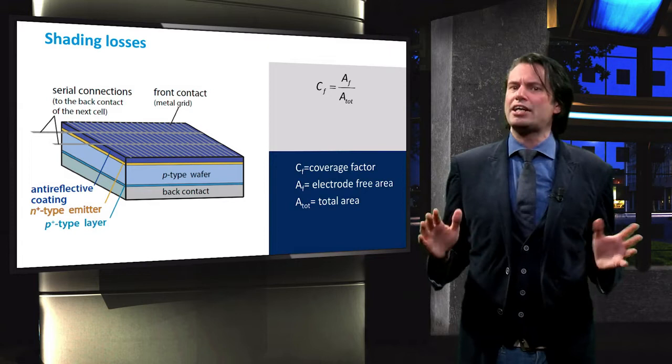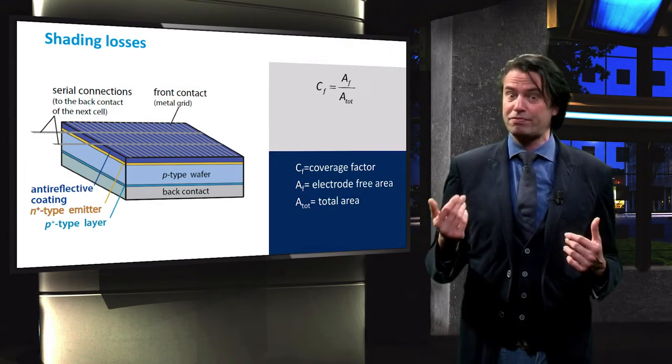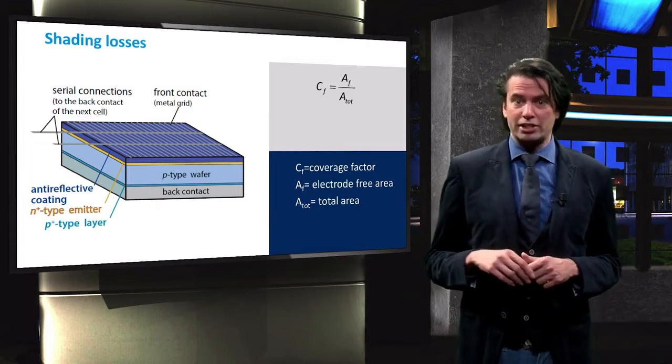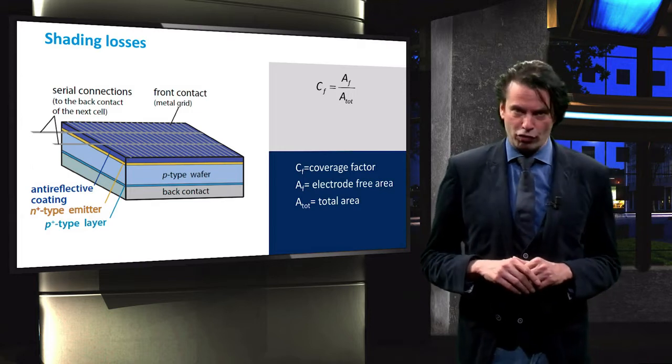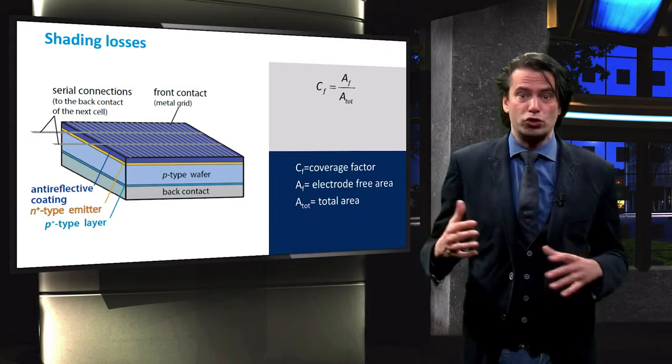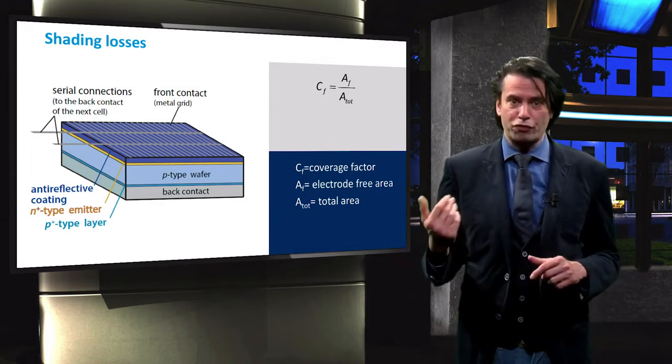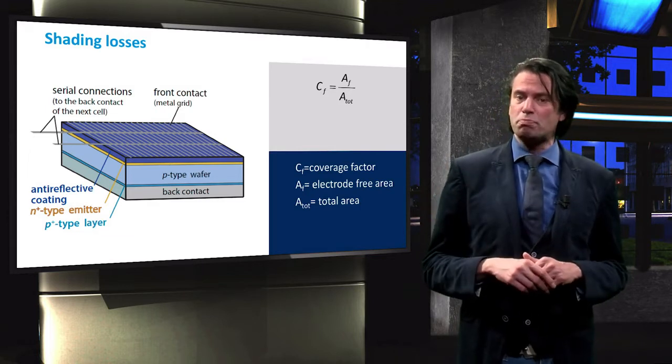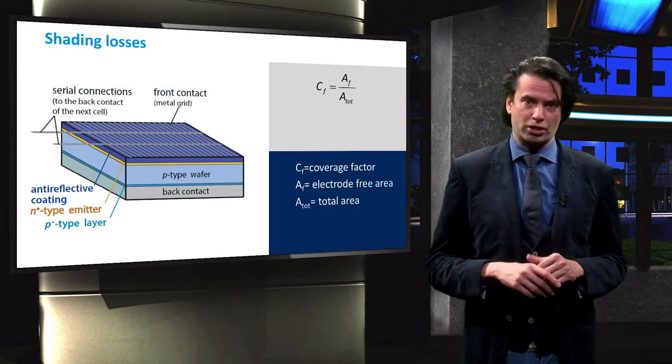Since the area under the electrodes is shaded, the active area of the solar cell is effectively decreased. The coverage factor, denoted by CF, is a measure of the active area of the solar cell, as it indicates the fraction of the total area not covered by electrodes. The coverage factor equals the electrode-free area, denoted by AF, divided by the total area of the solar cell.